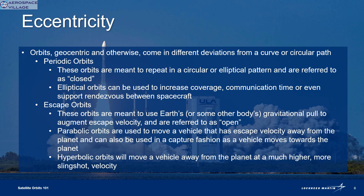Once we begin to consider the type of curve an orbit might have, we can begin to lump them into categories. Periodic orbits repeat in some consistent fashion and are either elliptical or circular in nature. Because there's not a break in the pattern, these are sometimes referred to as closed orbits. There is another class of orbit that's not meant to stay in a repeating pattern around the Earth. These are called escape or open orbits, and they're used to move vehicles away from the Earth in particular ways.